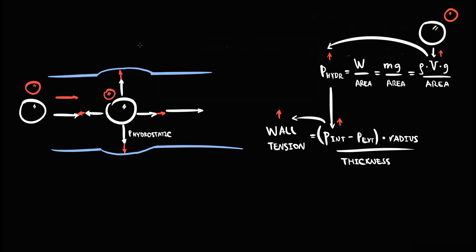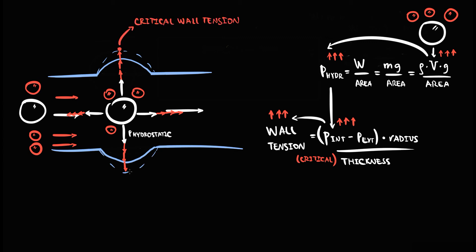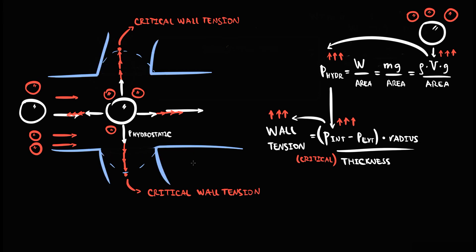With time, the inflow of blood to portosystemic shunts increases, so the volume of fluid inside the shunts increases. With increase in volume, hydrostatic pressure inside the shunts increases; with increase in hydrostatic pressure, wall tension increases; and increasing wall tension causes more severe vessel wall distension. If portal hypertension becomes even more severe, even more fluid passes through the collateral vessels, causing further increase in volume and hydrostatic pressure. When wall tension reaches a critical level, the force applied by hydrostatic pressure to the vessel wall prevails over the vessel wall's ability to distend, and rupture of the blood vessel occurs.